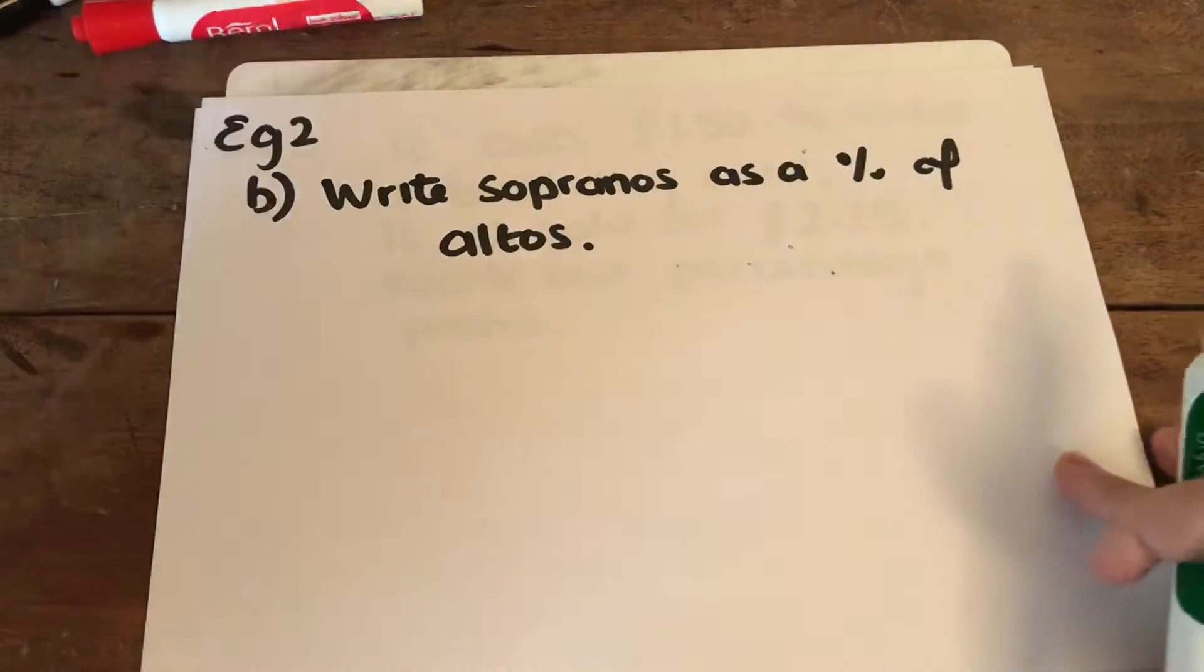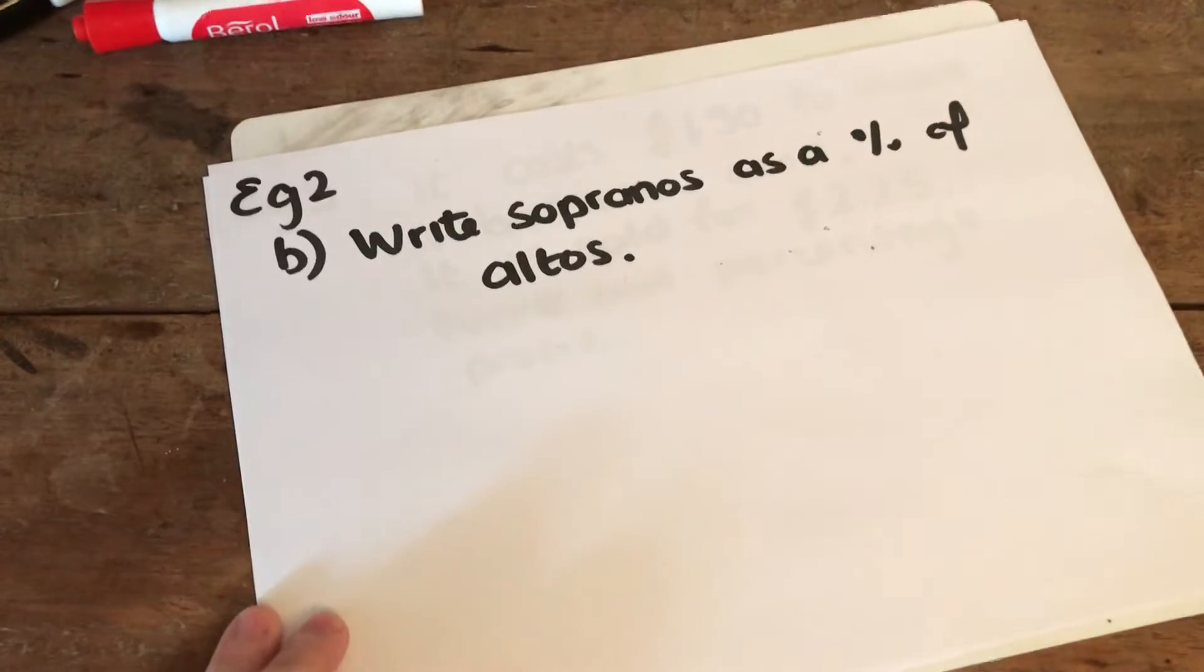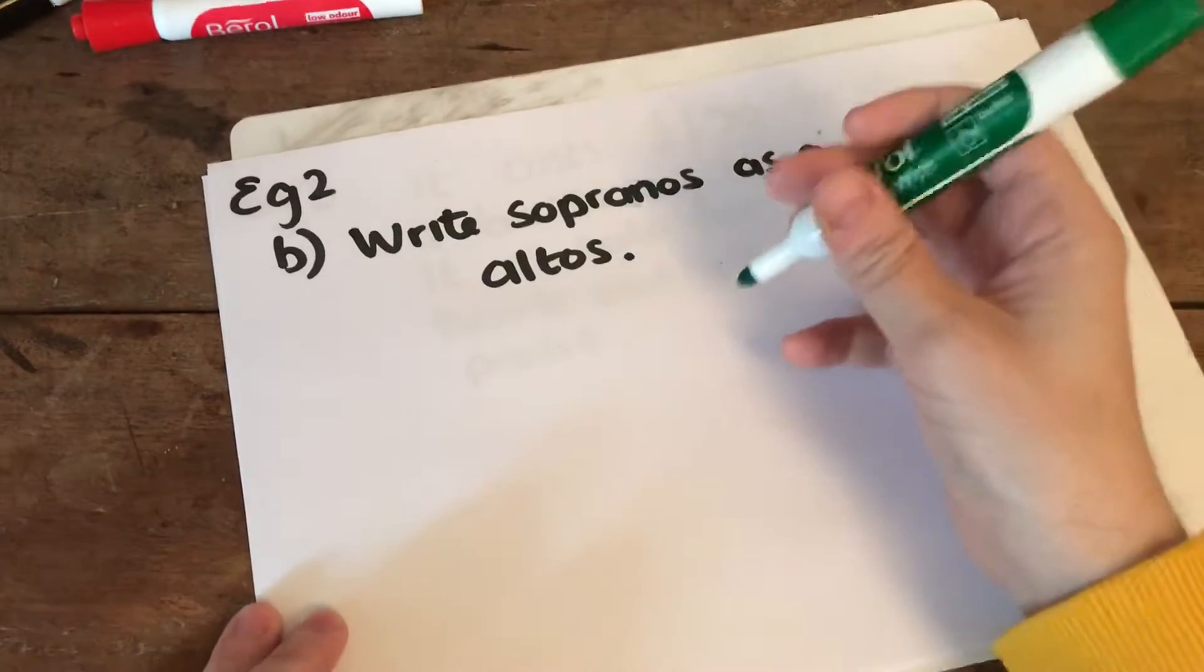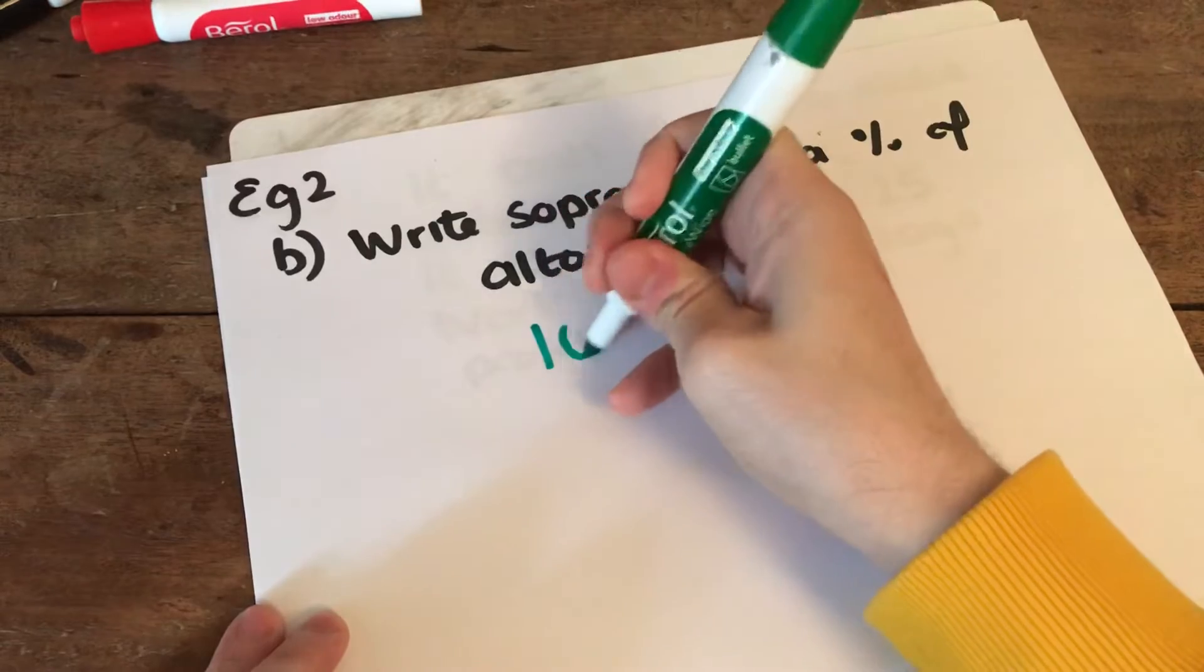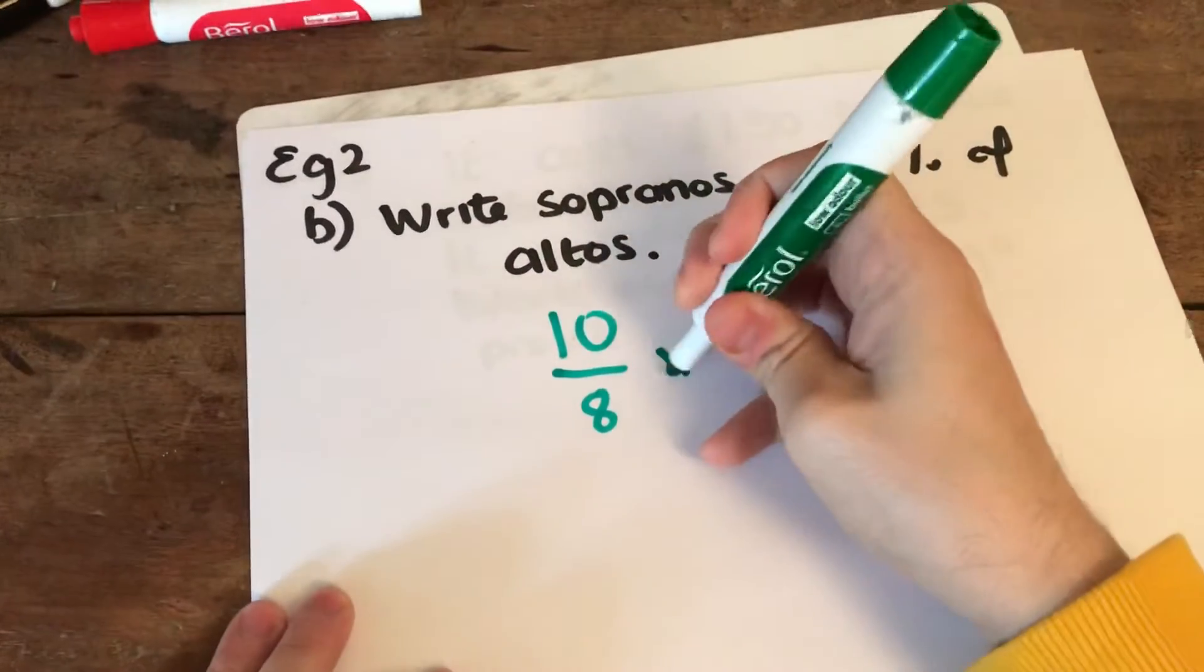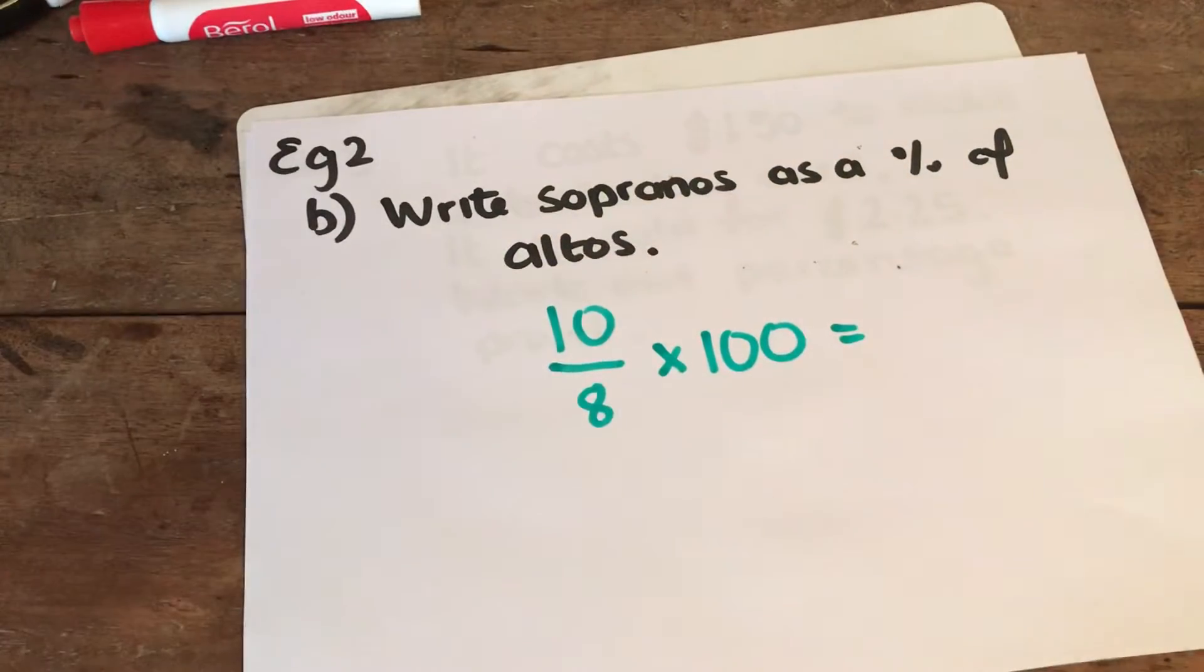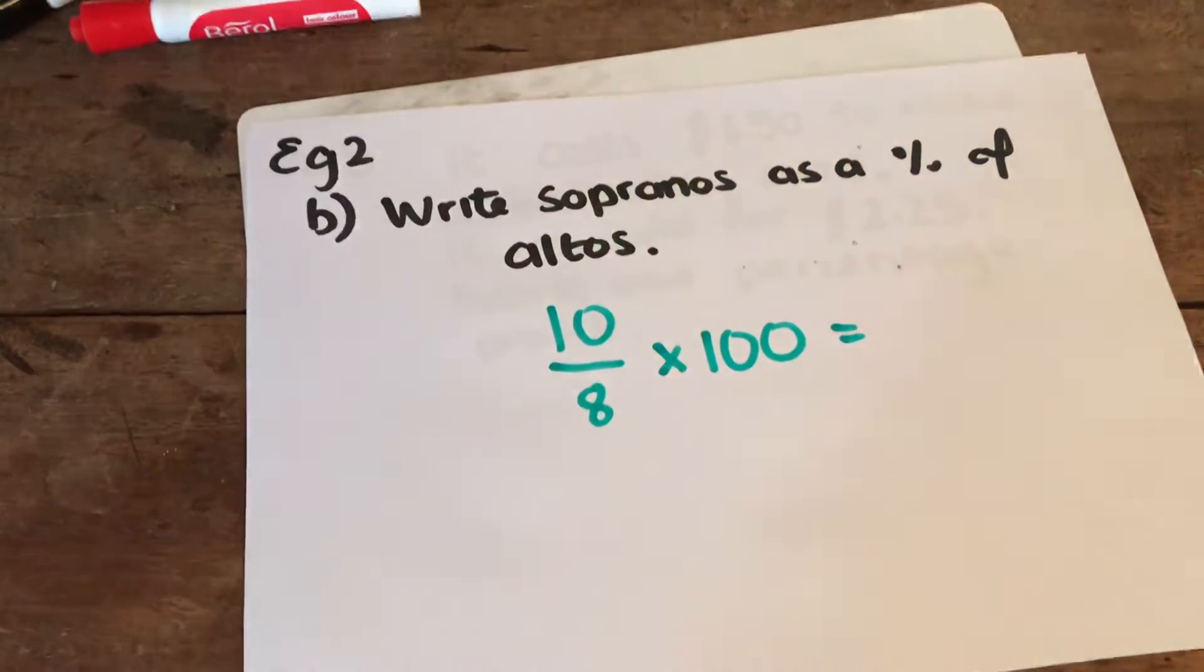you have to use your information from the previous question and it says write the sopranos as a percentage of the altos. So again, you are going to go 10 over 8. You then times this by 100. Notice that the fraction is upside down because you are writing them as a percentage the other way around. If you do that, you get 125%.